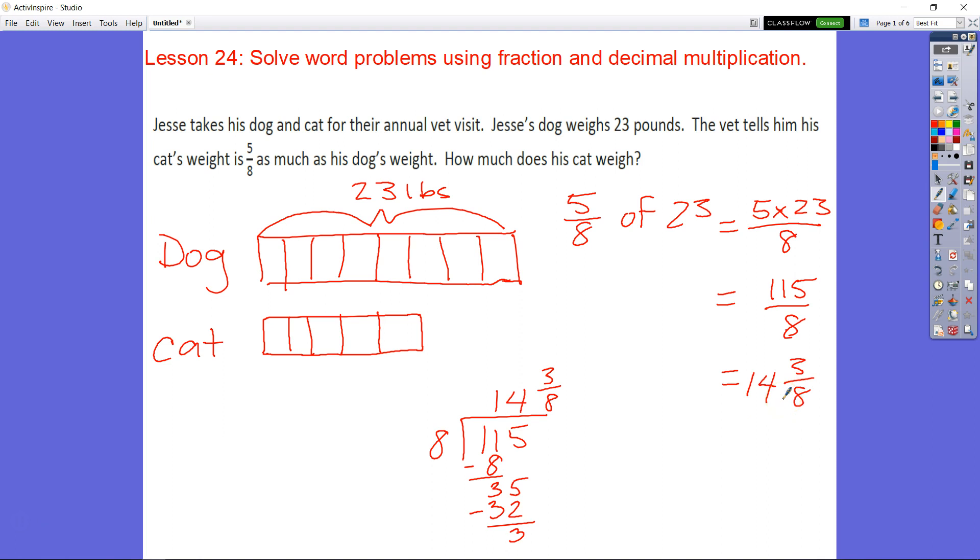So the cat weighs 14 and 3 eighths pounds, or if we were to break that out as a decimal, 3 eighths would be 375 hundredths. So it would be 14 pounds 375 hundredths of a pound. That's how much the cat weighs.